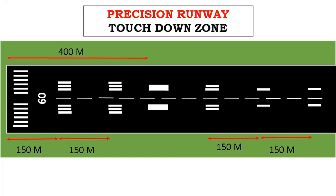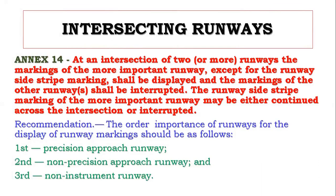At a runway intersection, the touchdown zone starts at 450 meters and the aiming point is at 400 meters, so only the aiming point marking will be shown on the runway. As per Annex 14, at an intersection of runways, the markings of the more important runway shall be displayed and the markings of the other runway shall be interrupted. The runway side stripe marking of the more important runway may be either continued or interrupted at the intersection. The order of importance is: first, precision approach runway; second, non-precision approach runway; third, non-instrument runway.